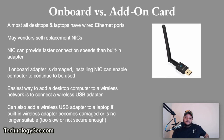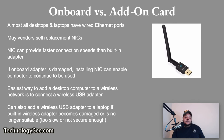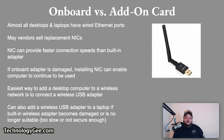Almost all desktops and laptops have wired Ethernet ports, but many vendors sell replacement NICs. A NIC can provide faster connection speeds than a built-in adapter, and if the onboard adapter is damaged, installing a NIC can keep a computer usable without a repair shop visit. The easiest way to add a desktop to a wireless network is to connect a wireless USB adapter. You can also add a wireless USB adapter to a laptop if its built-in wireless adapter is damaged, too slow, or not secure enough. To add Bluetooth support for printers, keyboards, or mice to a desktop or laptop lacking built-in Bluetooth, simply connect a Bluetooth adapter to a USB port.